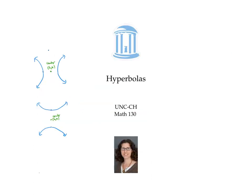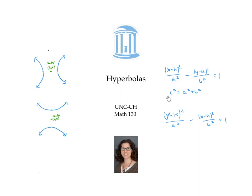In this video, we gave two equations for hyperbolas — which one you use depends on how the hyperbola is oriented. A represents the distance from the center to the vertex. C, found from c² = a² + b², is the distance from the center to the focus. And b and a together determine the slope of the asymptotes.